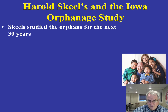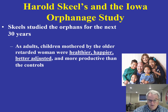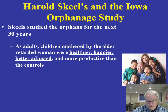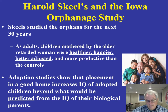Skeels studied these orphans over the next 30 years and found they were even more different as adults. The children with exposure to the older women were healthier, happier, better adjusted, and more productive. More recent adoption studies also show that if you're placed in a good home as an adopted child, your IQ will actually increase beyond what you would expect based on the IQ of your biological parents. This really counteracts the idea that it's all in the genes.